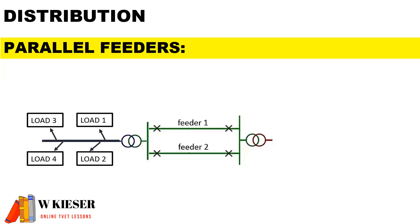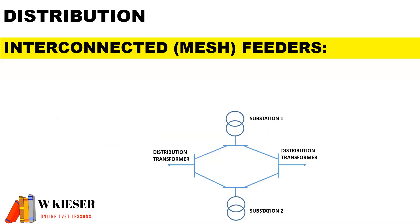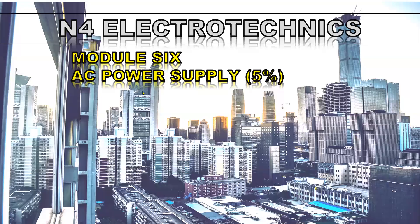For the parallel feeder, it is very similar to the loop feeder system and will have the same advantages and disadvantages, where it is being supplied from more than one side. For the interconnected or mesh feeder system, it is supplied by two or more secondary substations. Thank you very much for watching this video for AC power supply.